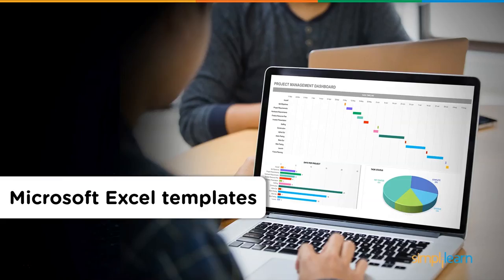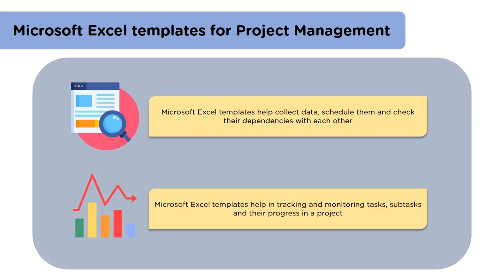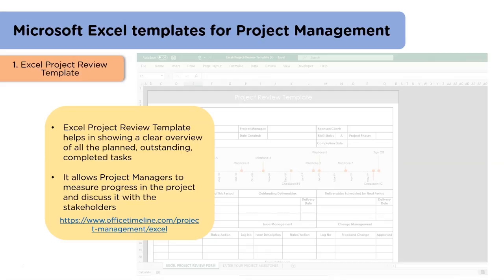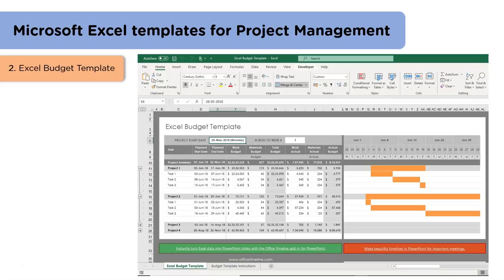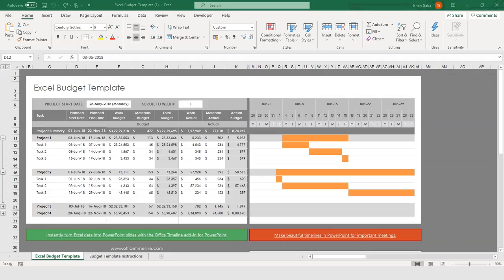Finally, let's have a look at some Microsoft Excel templates for project management. Microsoft Excel templates help in collecting data, putting them into order, and checking their dependencies with each other. With the help of these templates, we can monitor the status of tasks and check the progress our project has made. The first template is the Excel Project Review Template, which helps us have an overview of the project and a clear understanding of all planned and completed tasks. This helps project managers measure progress and take further steps accordingly. The second template is the Excel Budget Template, where we can monitor all the expenditures of our project and compare the budget at different phases. Let's have a look at the budget template in Excel.